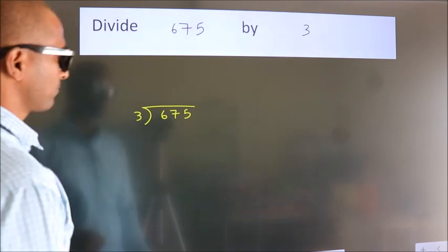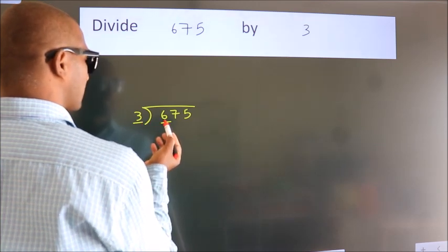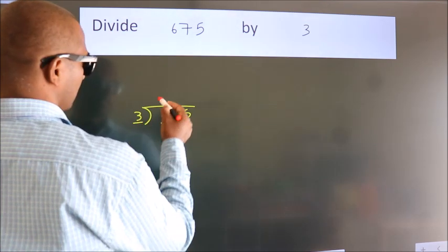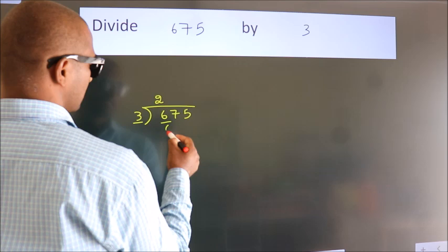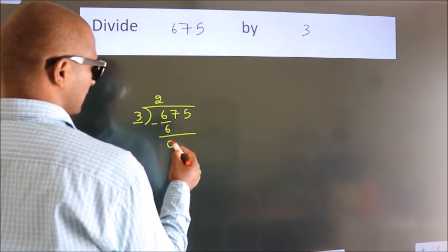Next. Here we have 6, here 3. When do we get 6 in 3 table? 3 times 2 is 6. Now we should subtract. We get 0.